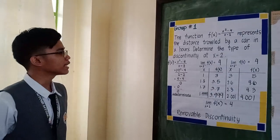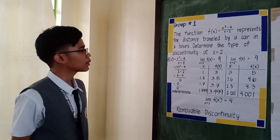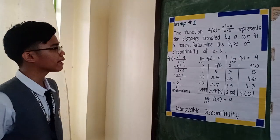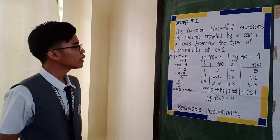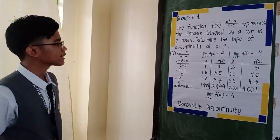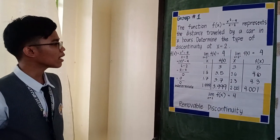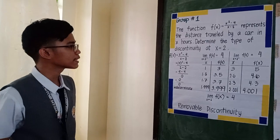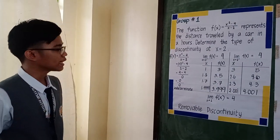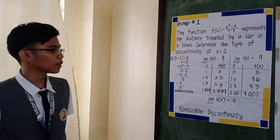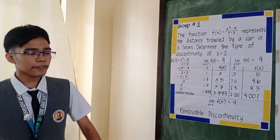The problem is: the function f of x is equal to x squared minus 4 over x minus 2, which represents the distance traveled by a car in x hours. Determine the type of discontinuity at x equals 2.